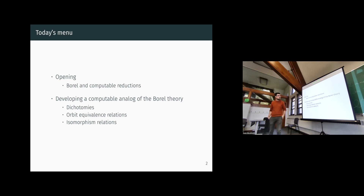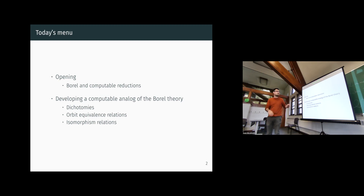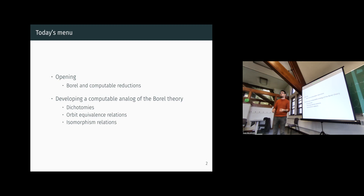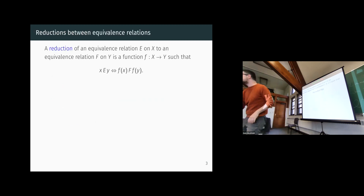For each of these main topics coming from the theory of equivalence relations, I will discuss how things behave when we try to effectivize them. I will tell you a few things about dichotomies — some basic things as a warm-up — and then concentrate on how we effectivize orbit equivalence relations (a crucial notion from the real theory) and how we deal with isomorphism relations.